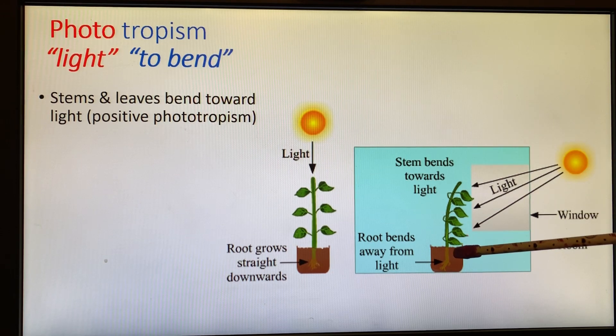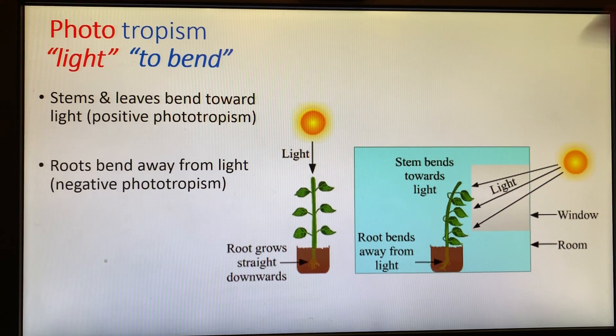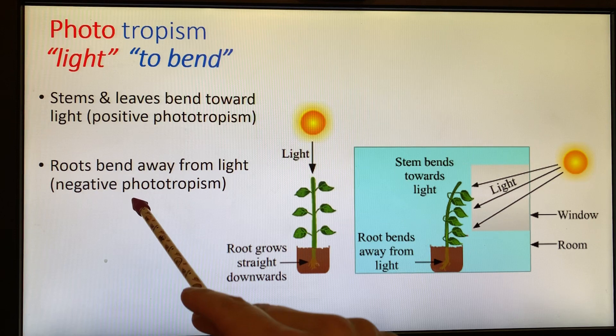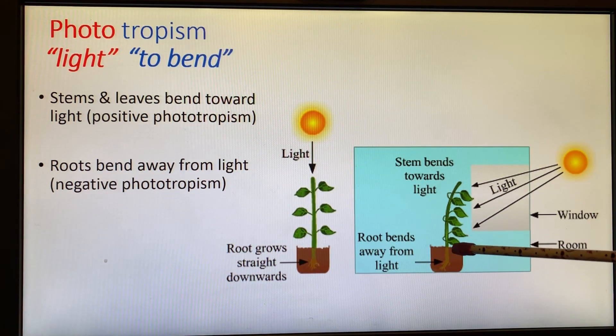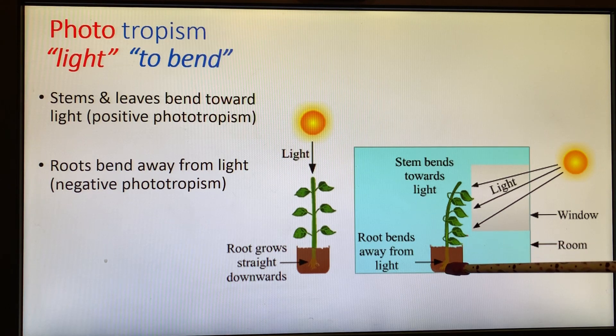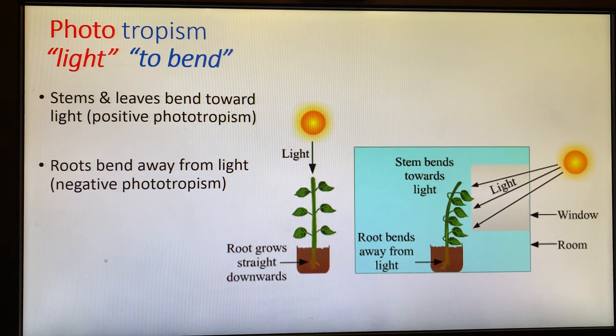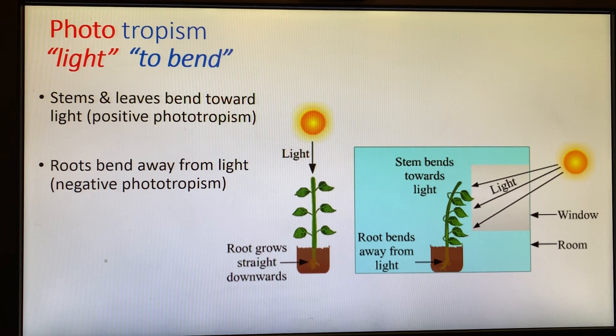But notice also the roots. The roots demonstrate negative phototropism because the roots bend away from the light. As the roots grow, if there's some sort of light getting to that soil, the roots will grow the opposite direction. That is phototropism.